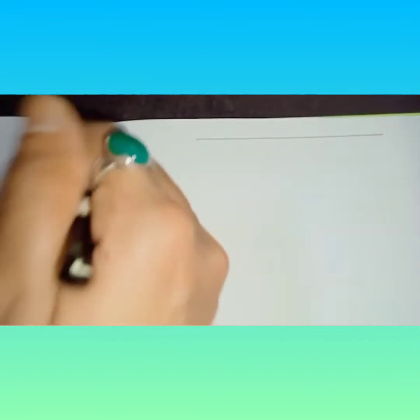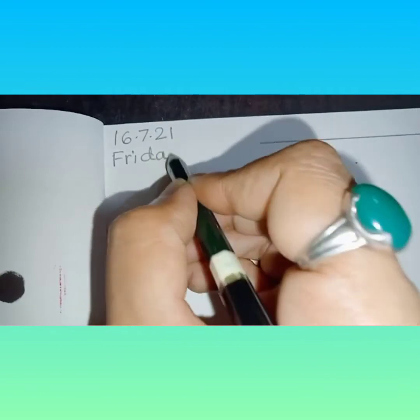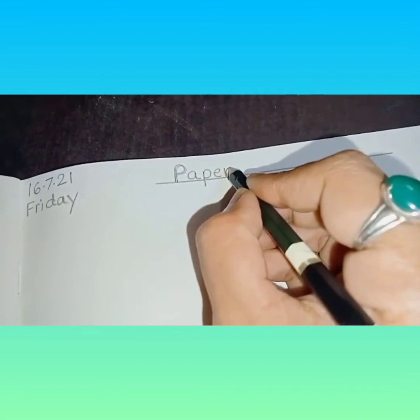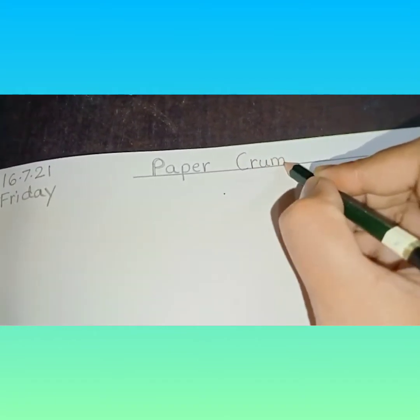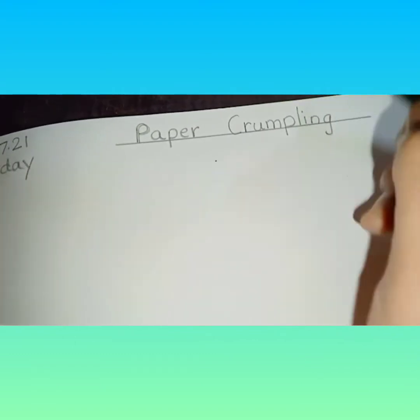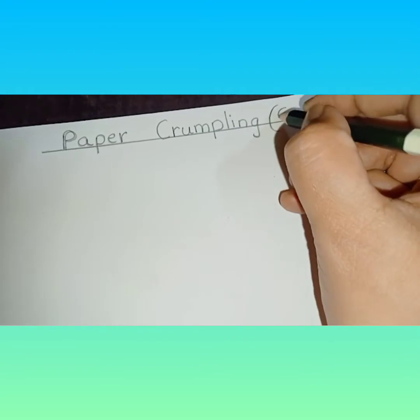So children, first in your drawing book you will write today's date. Today's date is 16-7-21. And today's day is Friday, F-R-I-D-A-Y. And we are going to make corn. So here we will write P-A-P-E-R paper crumpling, C-R-U-M-P-L-I-N-G. And after writing paper, you have to take one finger gap, then crumpling, and in a bracket you will write C-O-R-N corn. Okay?